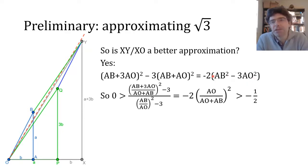And this means that the ratio of the errors of each ratio squared from 3 simplifies down to minus 2 lots of AO squared divided by AB plus AO squared, and this is clearly below zero and also above minus a half, because AB is greater than AO, if you remember AB is just a little bit over root 3 times AO in fact.